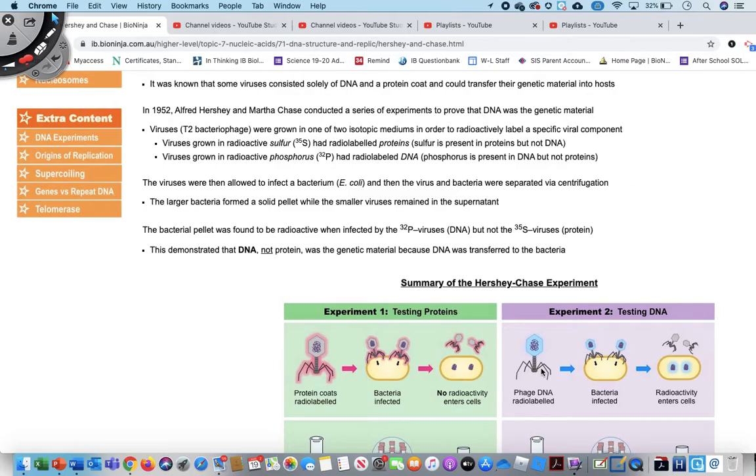So then they were put in a medium and they allowed the virus to infect the bacteria. So the virus does what the virus is supposed to do, which is it injects its genetic material into the bacteria. So then the idea was if the protein was the one that was being injected, then that means that the bacteria would have the radioactive sulfur-35 that was labeled in the protein.